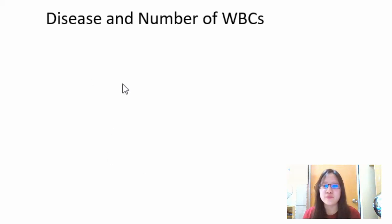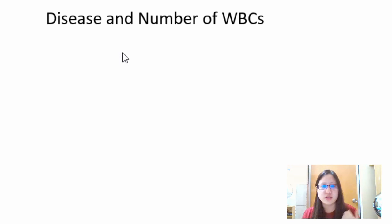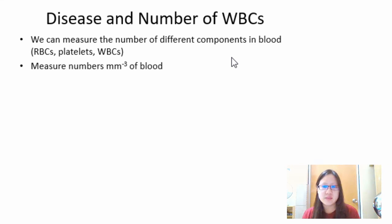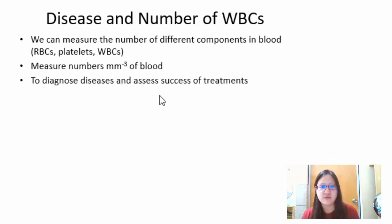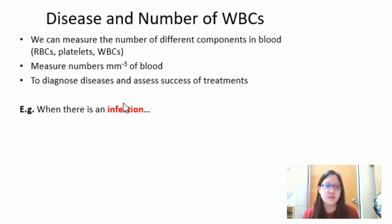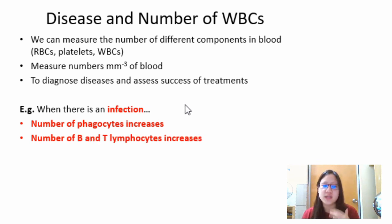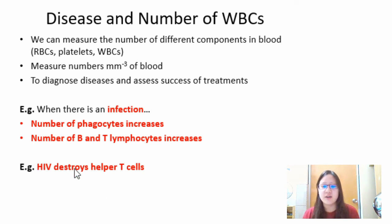Now that we know how the immune system works, we can measure different blood components to diagnose diseases or assess treatment success. We measure in units of numbers per millimeter cubed of blood. For example, during an infection, phagocyte numbers increase. By centrifuging a blood sample at high speed to separate layers, we can test each component — and we'd see that the number of B and T lymphocytes has increased.